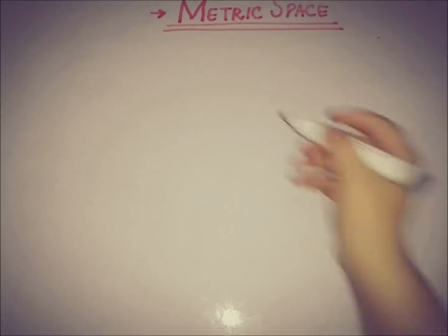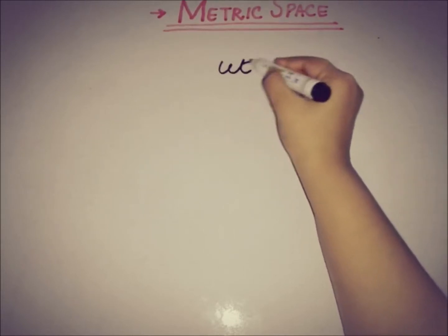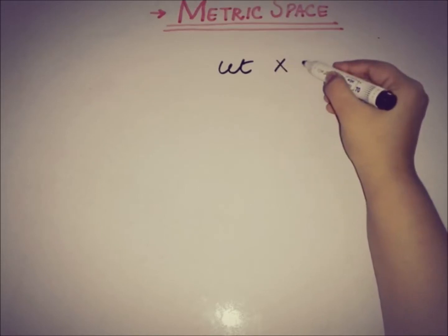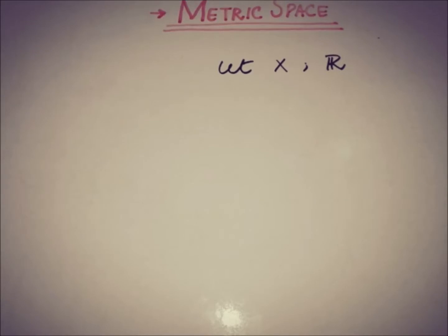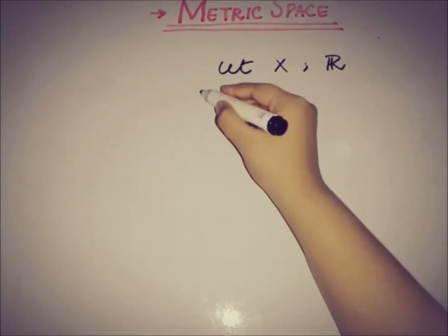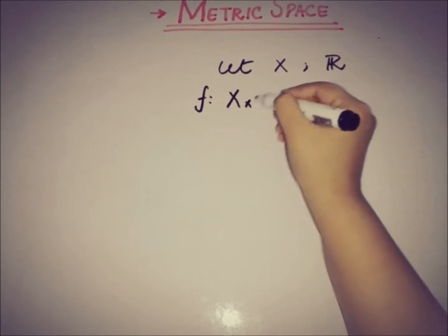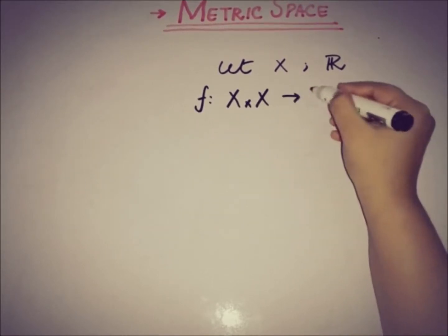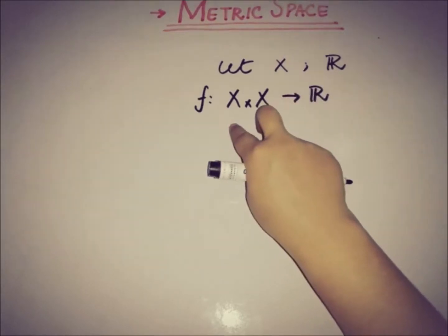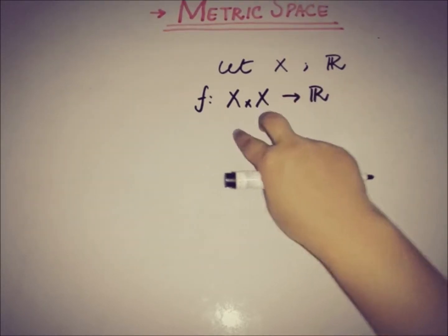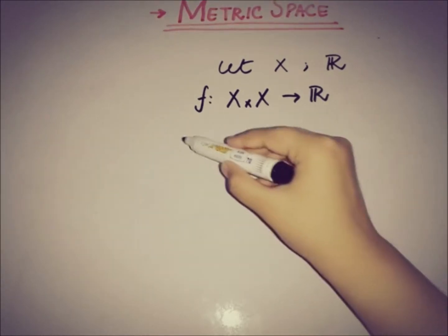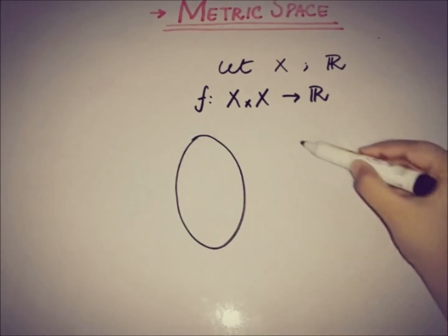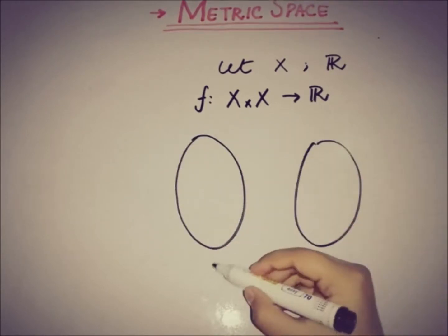So if X be a non-empty set and we have the set of real numbers R here, and we have defined a function from X cross X to R, if you pick a pair from this side then we will have a real-valued number on the other side. So we can also represent in this form, this is X and this is R.